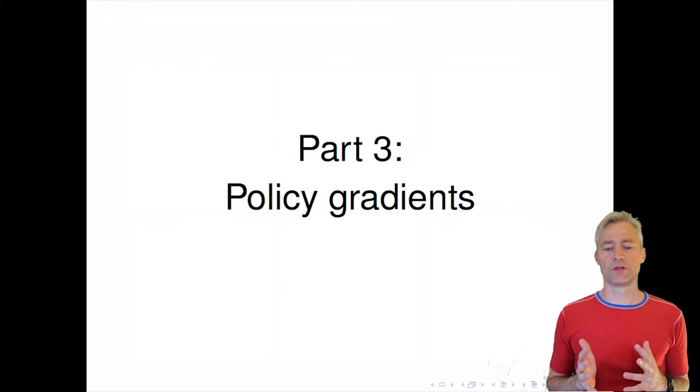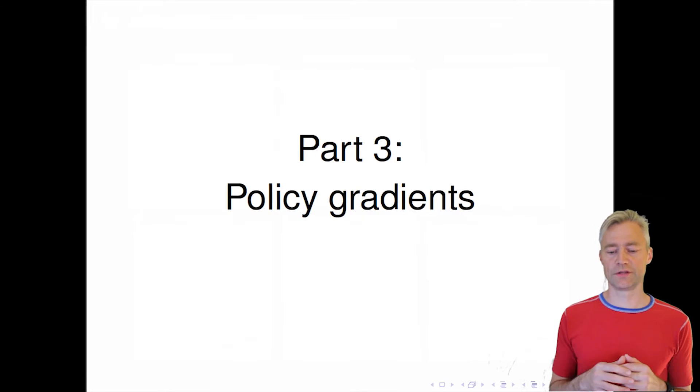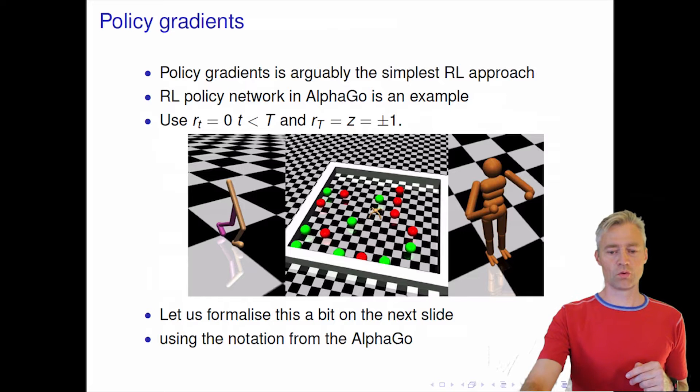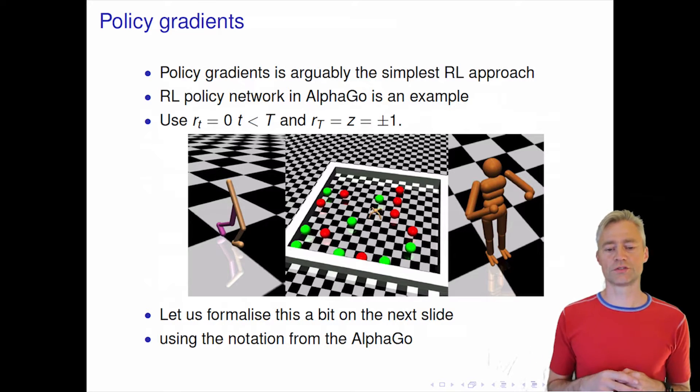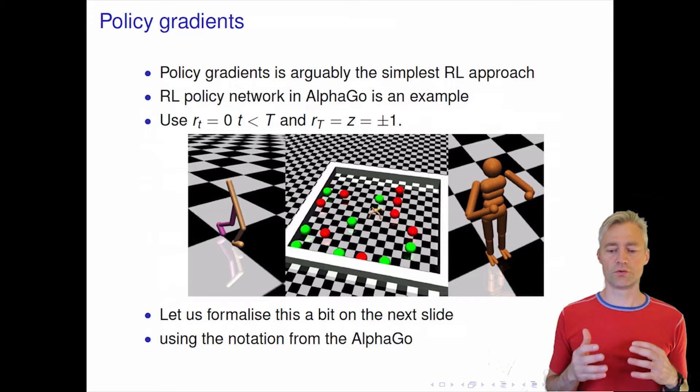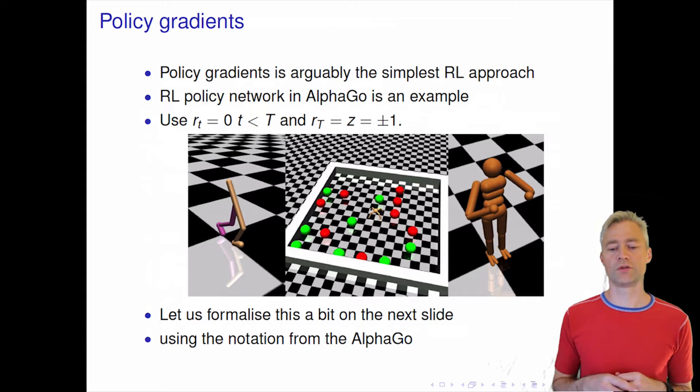In part three of today's lecture, I'll talk about the most simple or at least most intuitive approach to reinforcement learning called policy gradients. Actually, the AlphaGo system where we learned the reinforcement learning policy network is an example of a policy gradient approach.